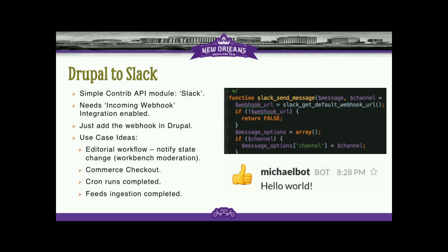There's also a great community module called Slack that allows Drupal to post information into a Slack channel. It exposes a very simple function called slack_send_message. You can define a default channel, but you can also override that per instance and send to any channel in your team domain. Some great use cases: if you use Workbench Moderation, when new content is pending approval it can notify editors in their Slack channel. You can do commerce checkout notifications, or have a DevOps channel notify your team when cron runs have completed.